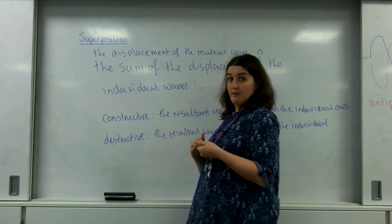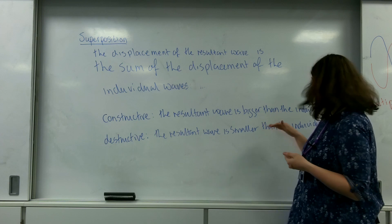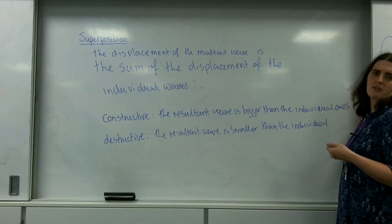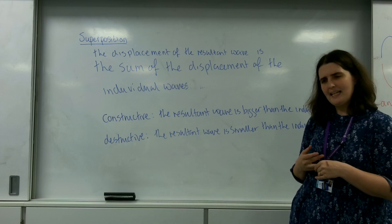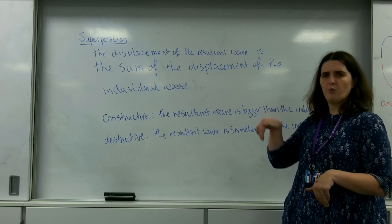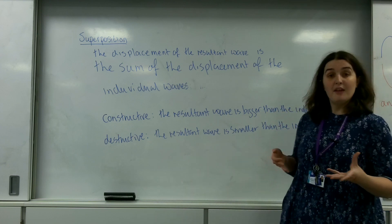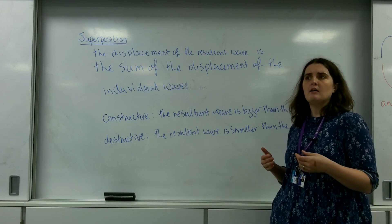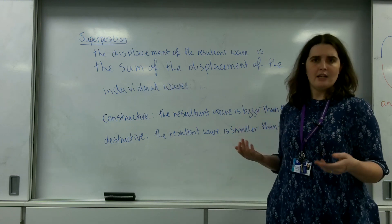Constructive interference is when the resultant wave that is made is bigger than the individual ones. So if I have two waves, and the resultant wave I see is bigger than the individuals, so for example, one wave and another peak with one, and the resultant I see is 1.5, that is constructive interference. They are interfering in such a way that I'm getting an addition of energy.